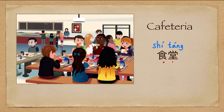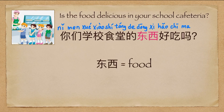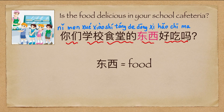食堂 (cafeteria). 你们学校食堂的东西好吃吗? (Is the food at your school cafeteria tasty?) Please pay attention — in this sentence, 东西 means food.